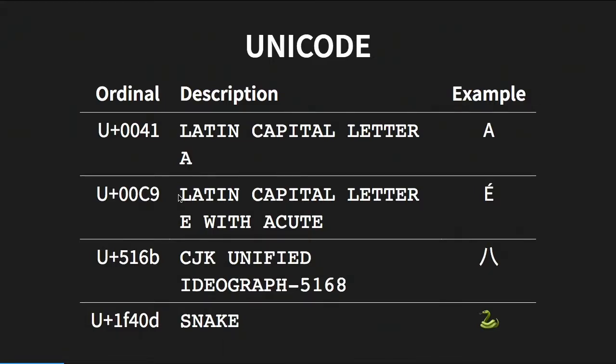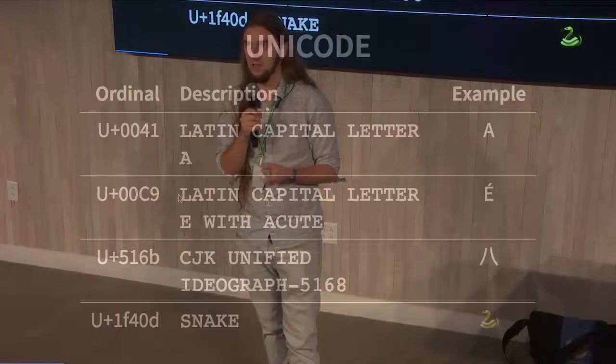Unicode maps a number to a sort of letter or something you can display, and it gives you a general idea of what the letter is going to look like, plus extra fields. For instance, the Chinese character there stands for eight — it actually gives you the numerical value for it, so you could multiply numbers together just by consulting the Unicode table.